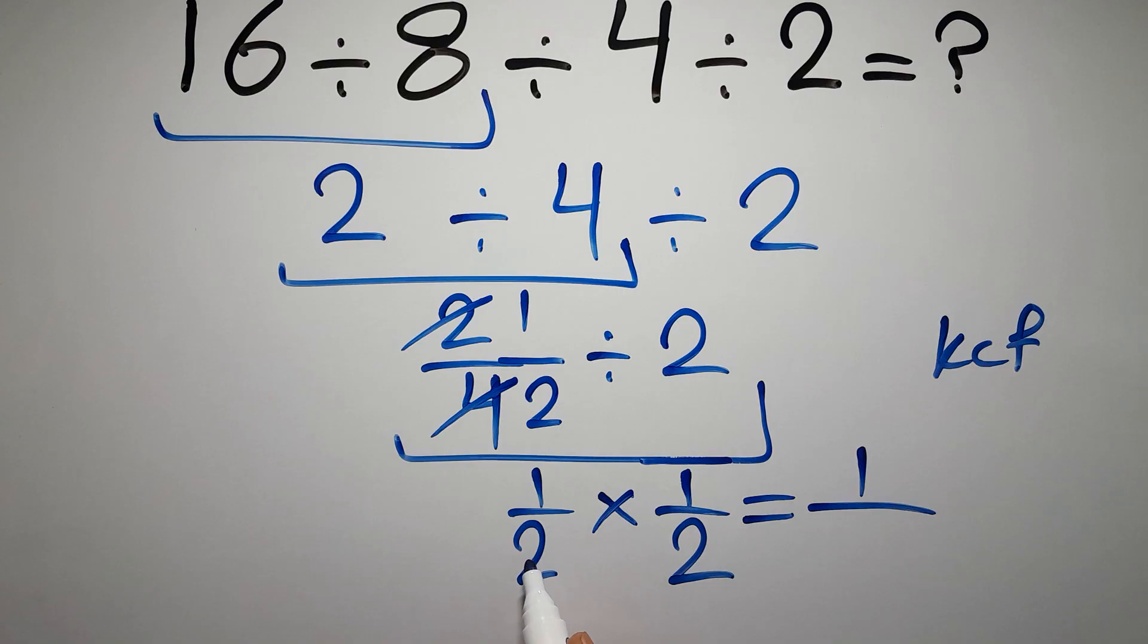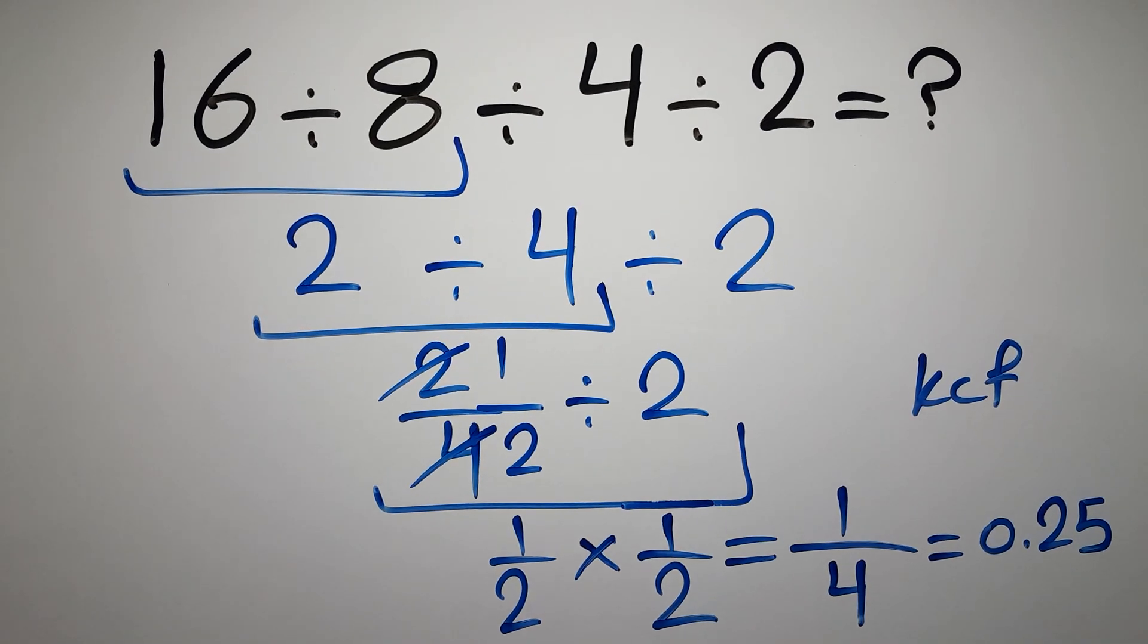So 1 over 2 times 2, which equals 4. 1 over 4 or 0.25, and this is our final answer to this problem.